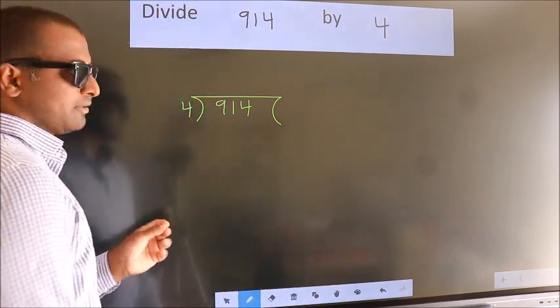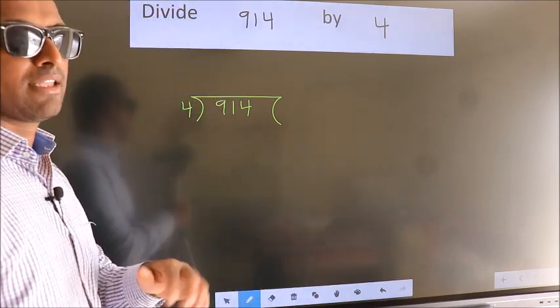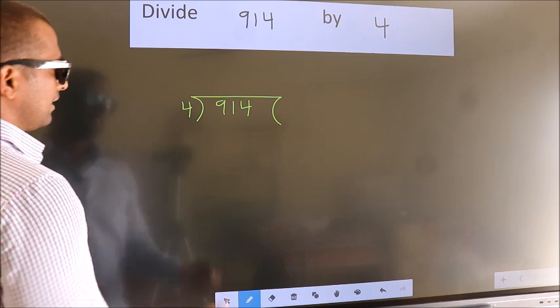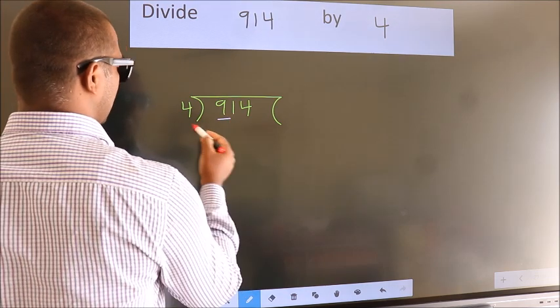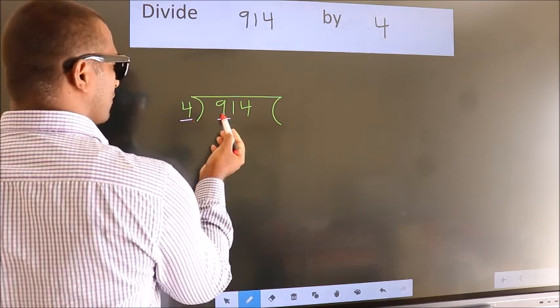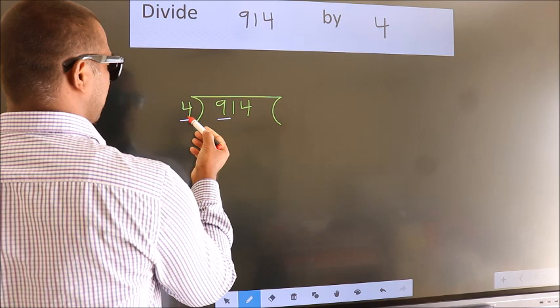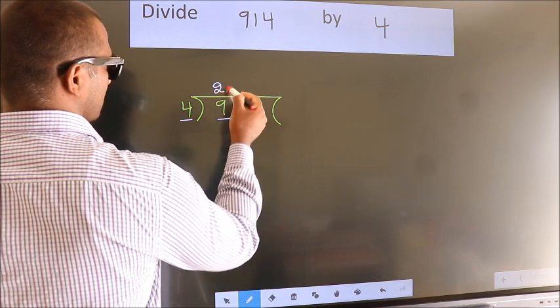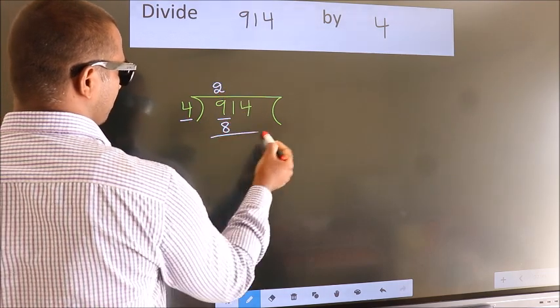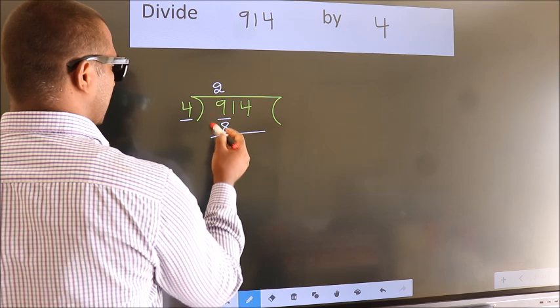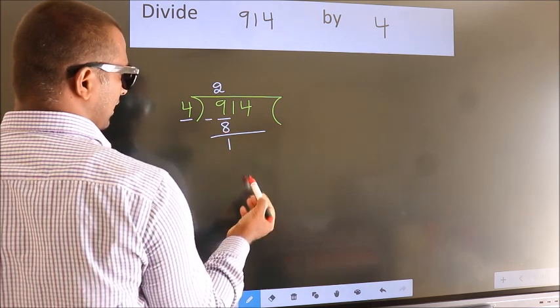This is your step 1. Next, here we have 9, here 4. A number close to 9 in 4 table is 4 times 2, which is 8. Now we should subtract, we get 1.